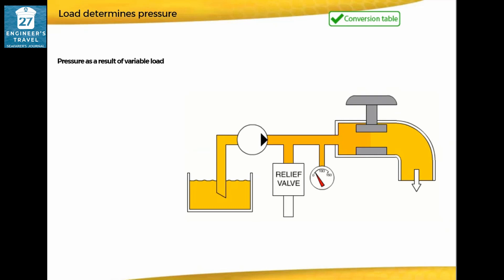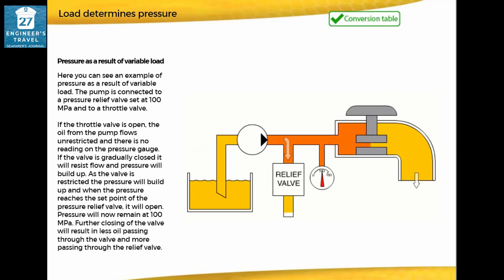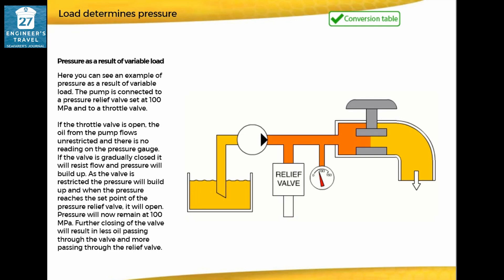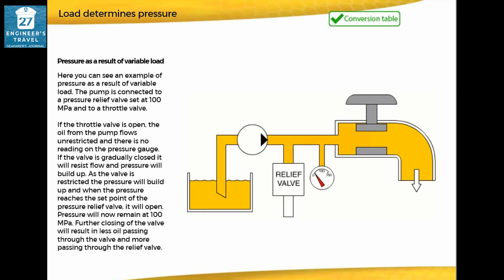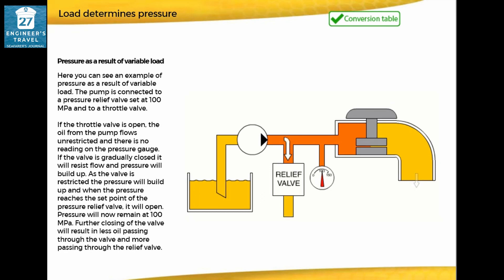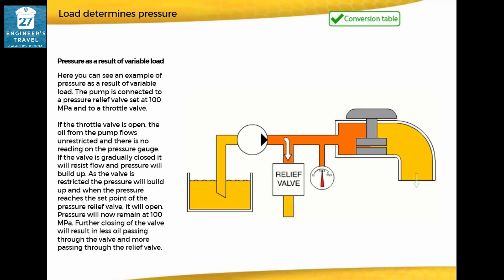Pressure as a result of variable load: the pump is connected to a pressure relief valve set at 100 megapascals, and to a throttle valve. If the throttle valve is open, the oil from the pump flows unrestricted and there is no reading on the pressure gauge. If the valve is gradually closed, it will resist flow and pressure will build up. When the pressure reaches the set point of the pressure relief valve, it will open, and pressure will remain at 100 megapascals. Further closing of the valve will result in less oil passing through the valve and more passing through the relief valve.